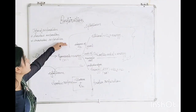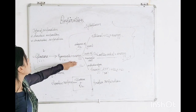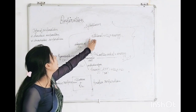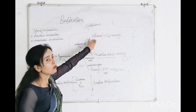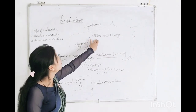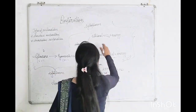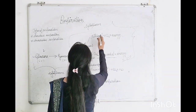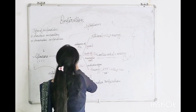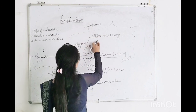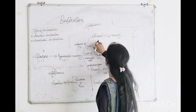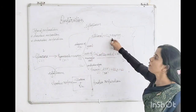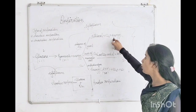In alcoholic fermentation, this pyruvate breaks down into ethanol — ethanol and alcohol are the same. It does not completely break down; it breaks down into ethanol, and then energy and carbon dioxide are released.